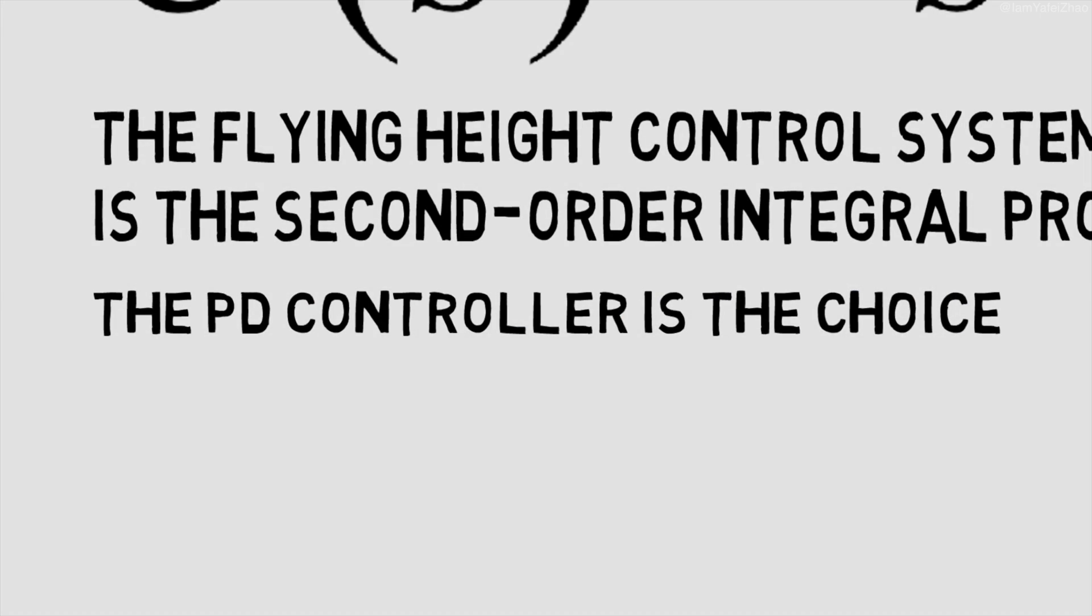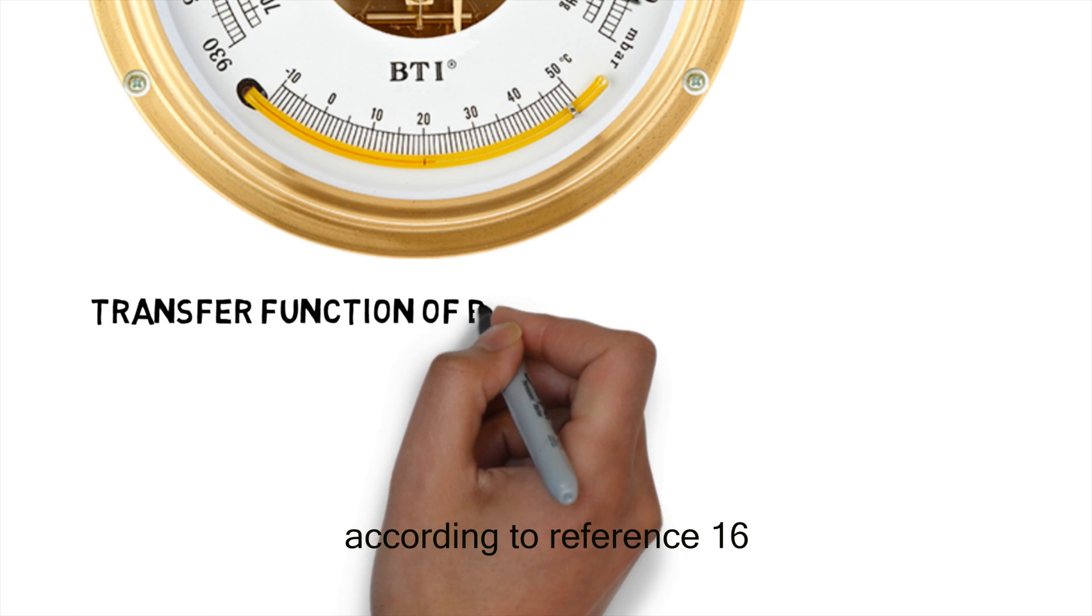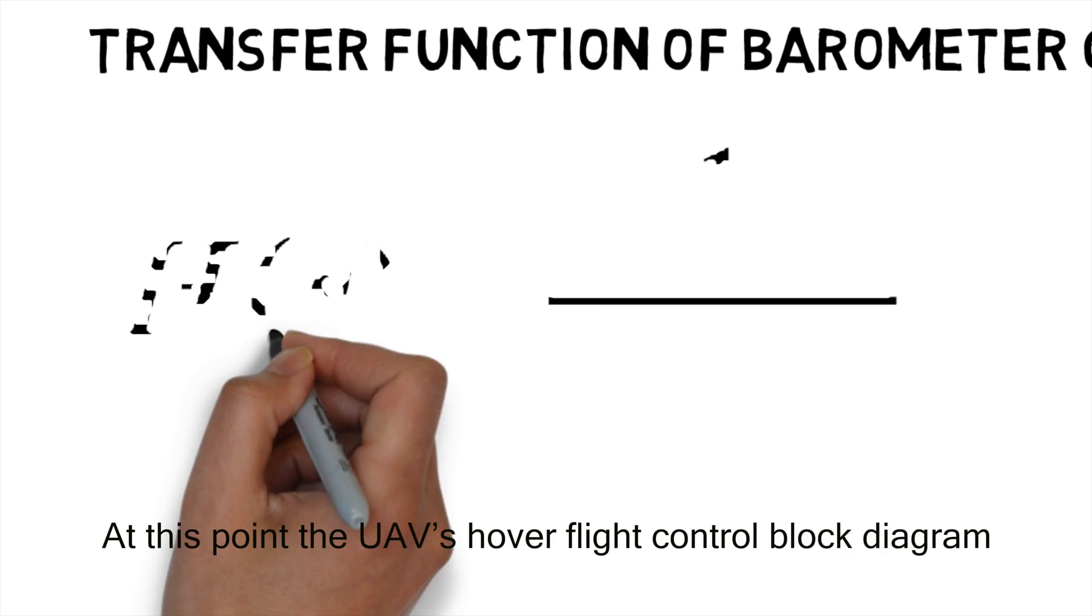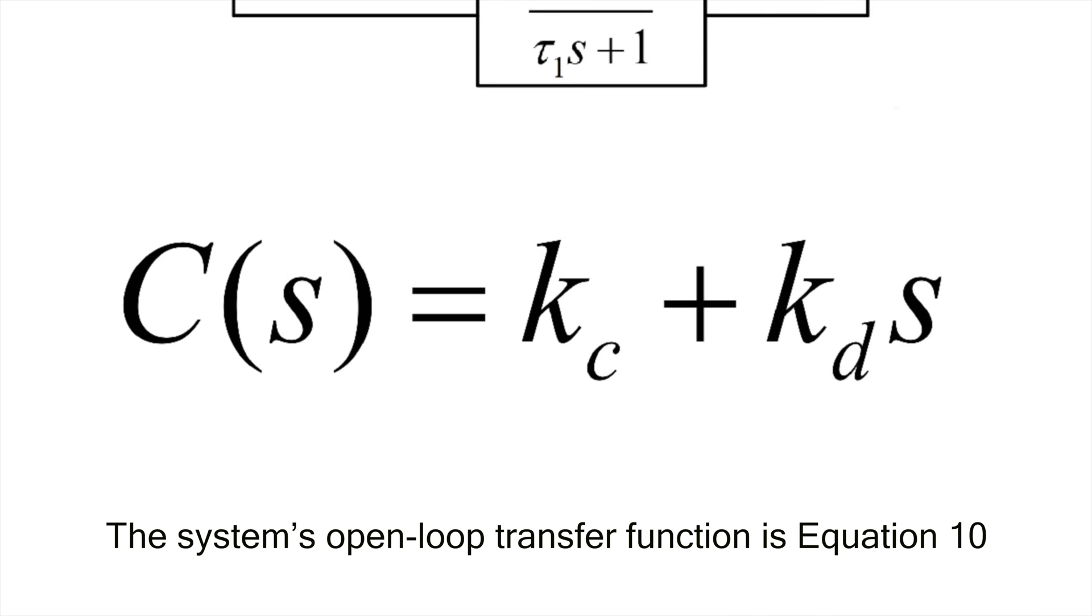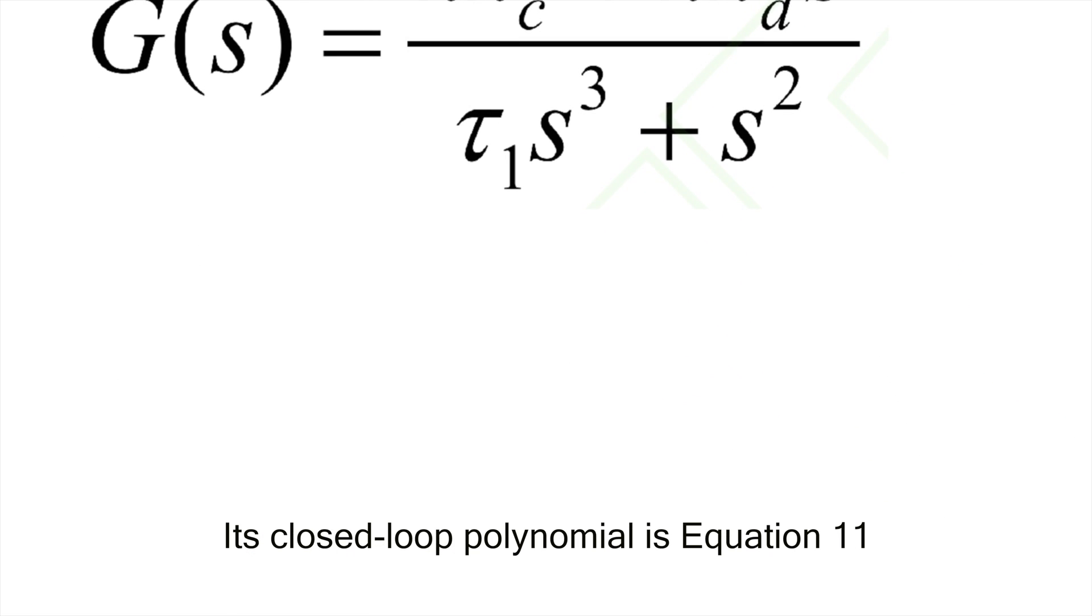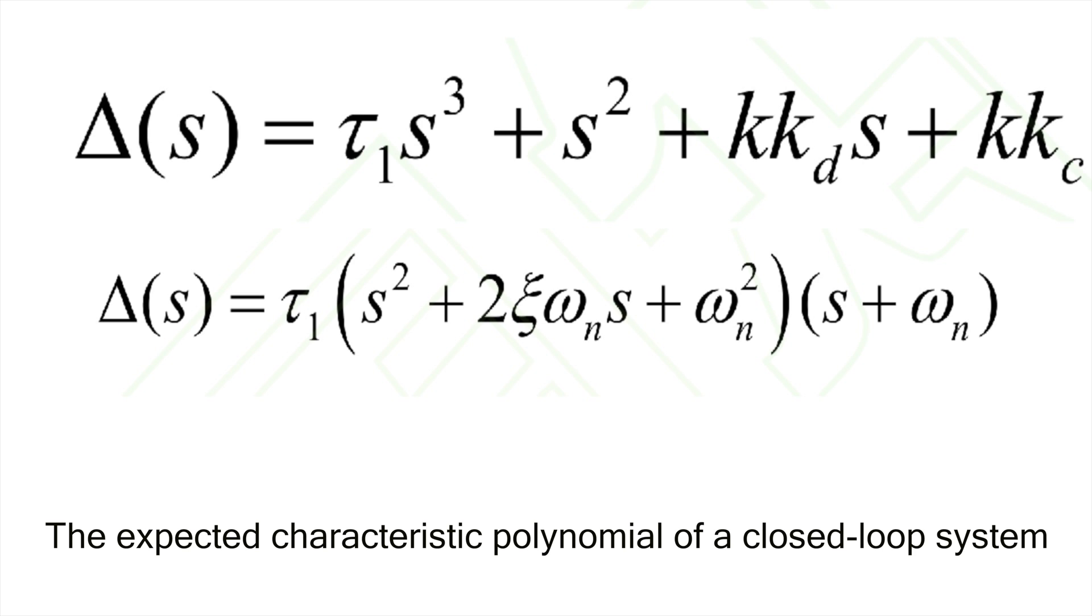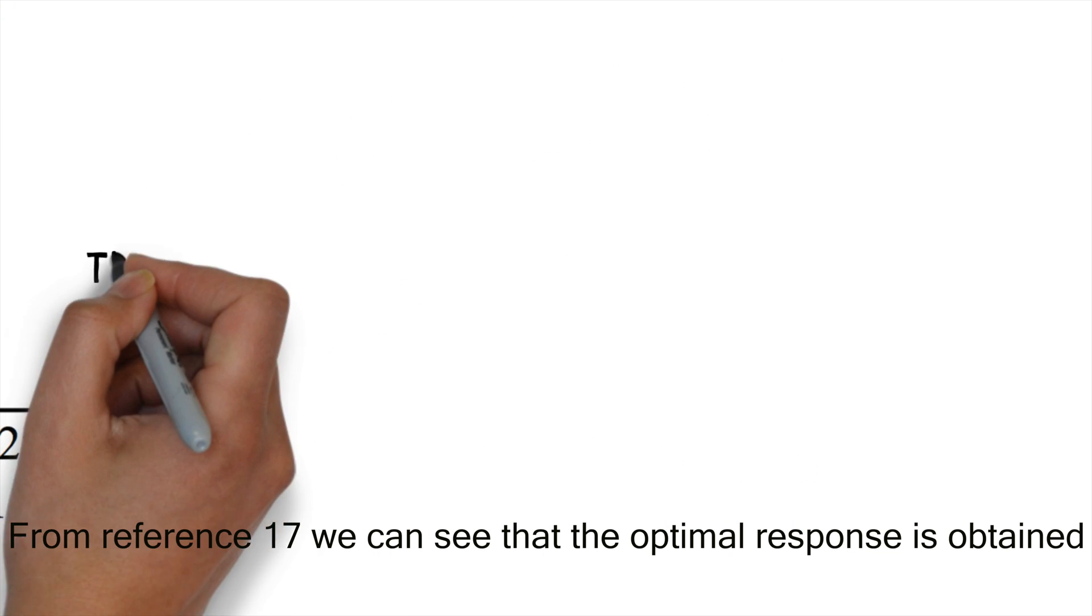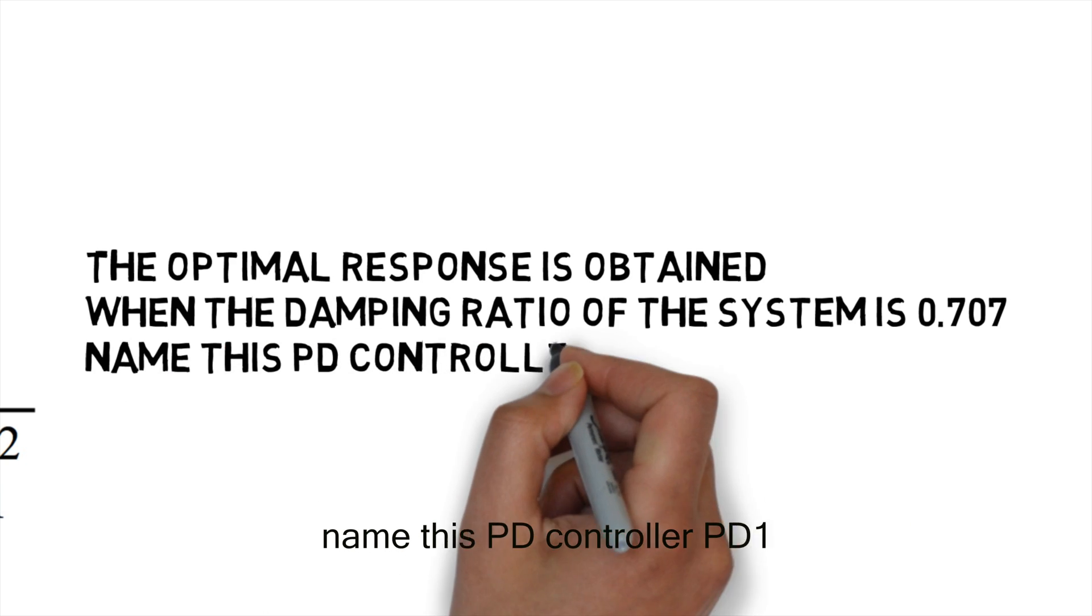The real-time altitude of the quadrotor was measured by barometer and its time delay was recorded as tau1. According to reference 16, the transfer function of the barometer can be expressed as equation eight. At this point, the UAV's hover flight control block diagram is shown in figure two, among which the transfer function of the PD controller is equation nine. The system's open-loop transfer function is equation 10. Its closed-loop polynomial is equation 11. The expected characteristic polynomial of a closed-loop system for a typical third-order system is equation 12. Combining equation 11 and 12 gives equation 13. From the reference, we can see that the optimal response is obtained when the damping ratio of the system is 0.707. We name this PD controller PD1.